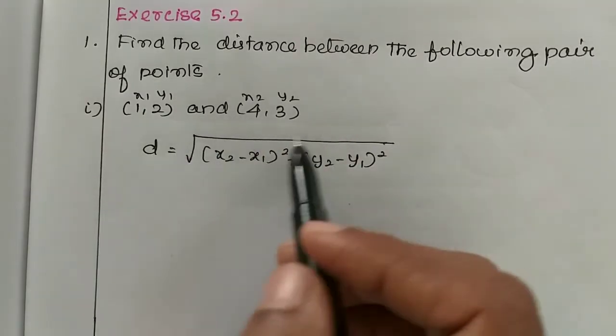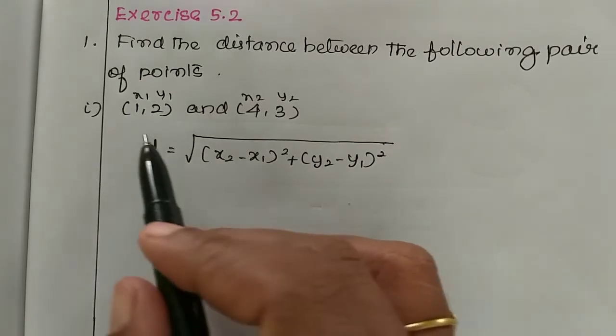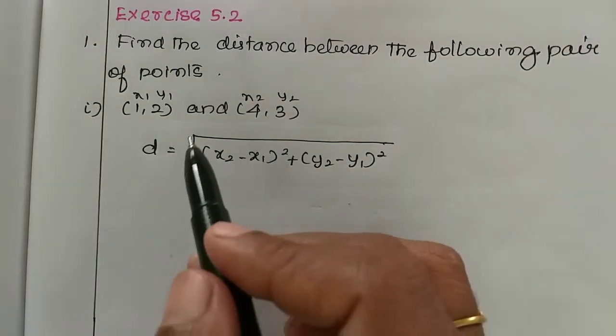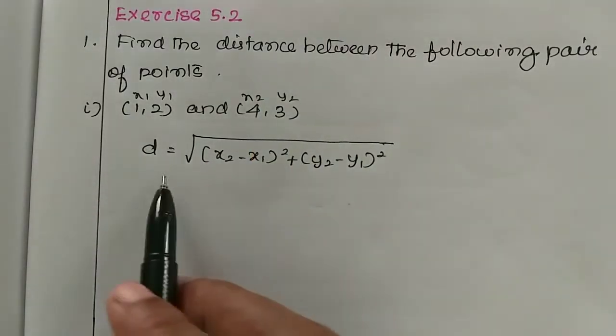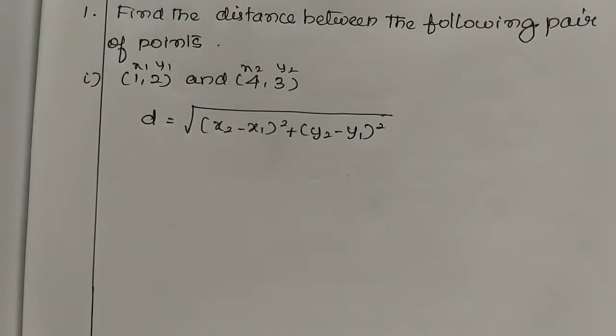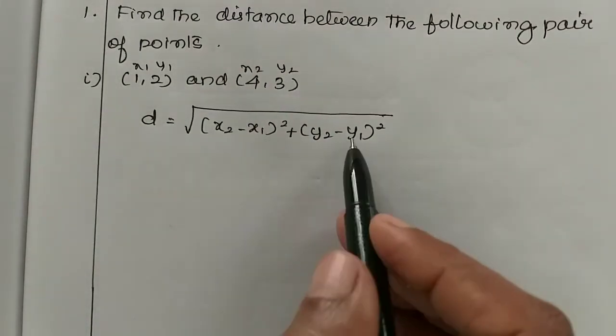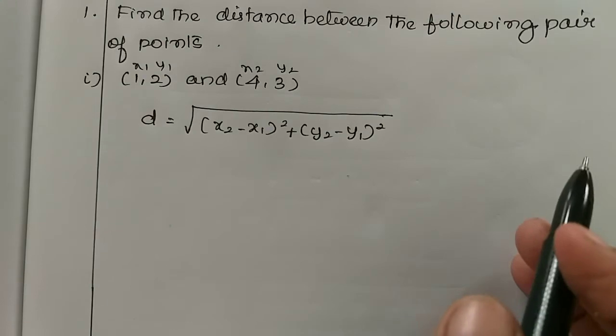If not, the answer is wrong. So the number is to concentrate on the number. Distance formula is equal to root of (x2 minus x1) the whole square plus (y2 minus y1) the whole square.